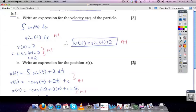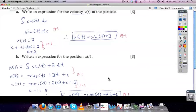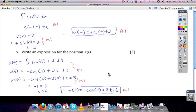Then the initial position is given to be 5. So negative cos of 0 plus 2 times 0 plus c is 5. Solving that, we end up with c equaling 6. Putting it all together, the position function is minus cos of t plus 2t plus 6.